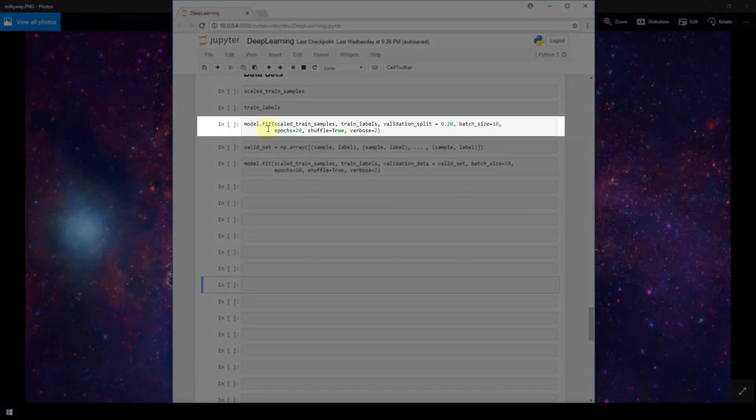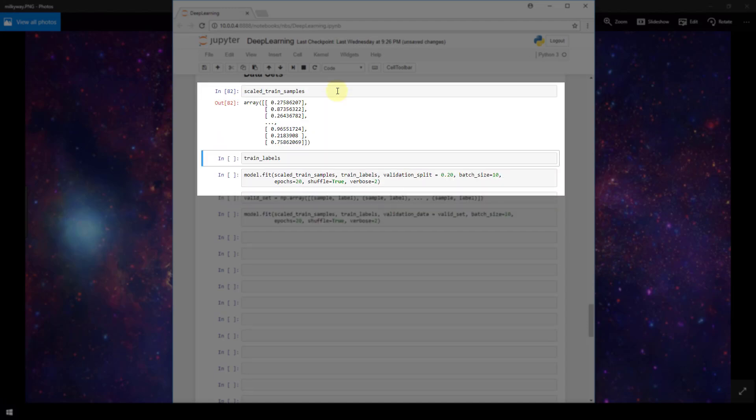Now whenever we fit the model, I said in a previous video that we are passing the train samples and train labels as the first two parameters to the fit function. Now these train samples are our entire training set, and Keras is expecting this training set to be in a format of either a numpy array or a list of numpy arrays. So I'm just going to print out this training set here so that you can see that it's just simply a numpy array here.